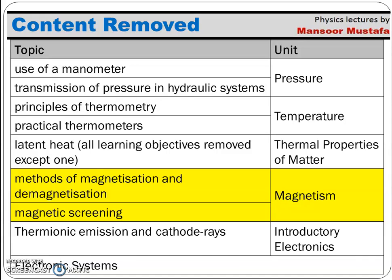The next removed topics are from the chapter on magnetism: 'methods of magnetization and demagnetization' and 'magnetic screening' — both removed from the new syllabus. Following that, from introductory electronics: 'thermionic emission' and 'cathode rays' are also removed.